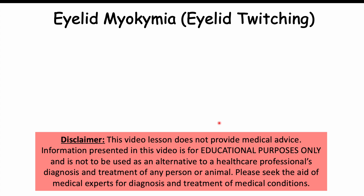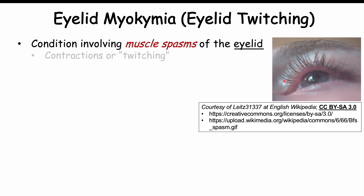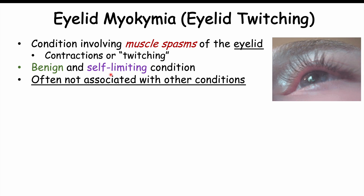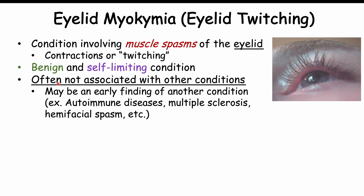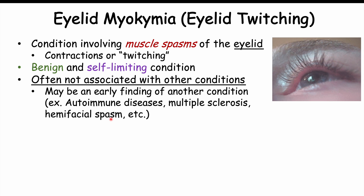This lesson is on eyelid twitching, also known as eyelid myokymia. Eyelid myokymia is a condition involving muscle spasms of the eyelid — contractions or twitching that can look like this. This is a benign and self-limiting condition and is often not associated with other conditions, although it may be an early finding of certain autoimmune diseases, multiple sclerosis, hemifacial spasm, and some other conditions as well.